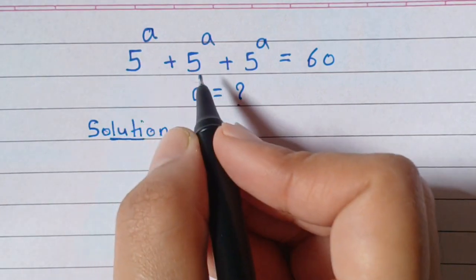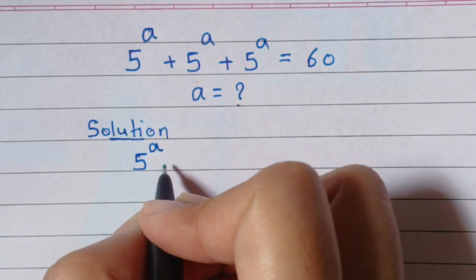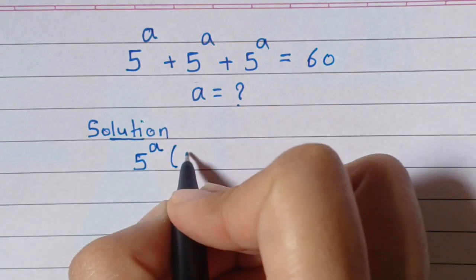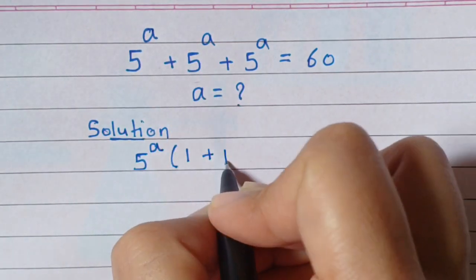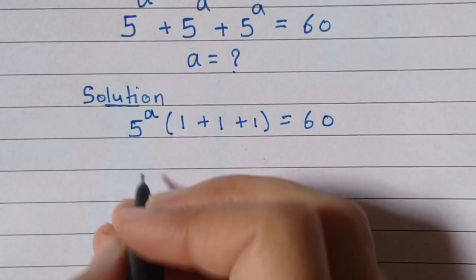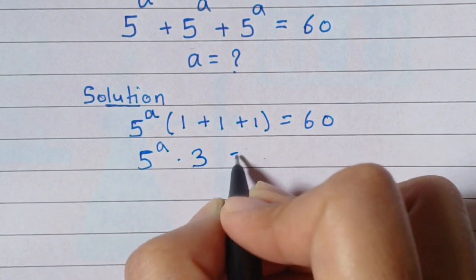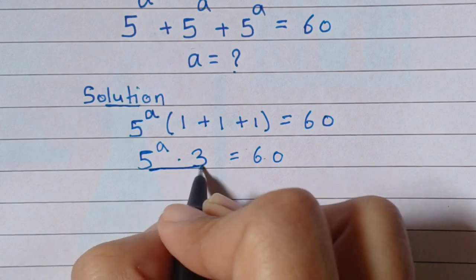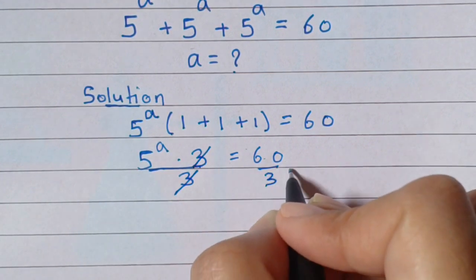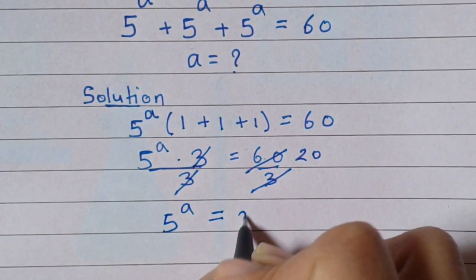So 5 to the power a is common, so we take 5 to the power a out. When you divide 5 to the power a by 5 to the power a you will get 1, then plus 1 plus 1 is equal to 60. Then 5 to the power a times 3 is equal to 60. Divide both sides by 3 — this 3 and 3 will get cancelled. Then 5 to the power a is equal to 20.